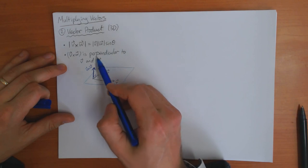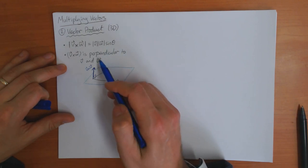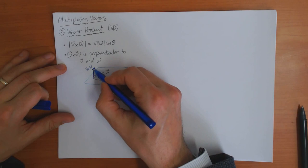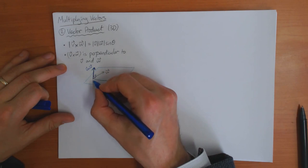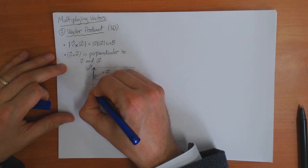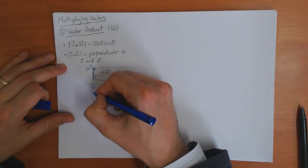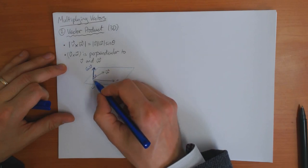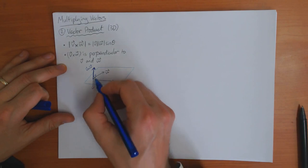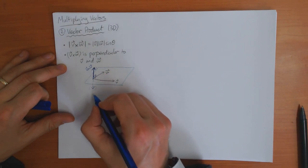I've defined its length and I've defined its direction, but it's still not quite unique, because I could choose it pointing this way or I could have chosen it pointing that way. Both of these vectors have the same length and they are both perpendicular to v and w. So how do I know to choose this one and not that one?